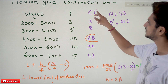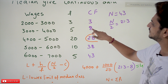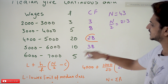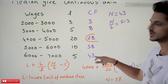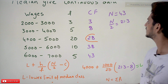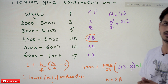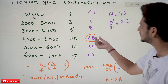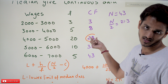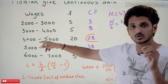Cumulative frequency: 3, 3+5=8, 8+20=28, 28+10=38, 38+5=43. Total employees = 43. n/2 = 43/2 = 21.5, approximately 21.3 — this belongs to the class 4000 to 5000, which is our median class.